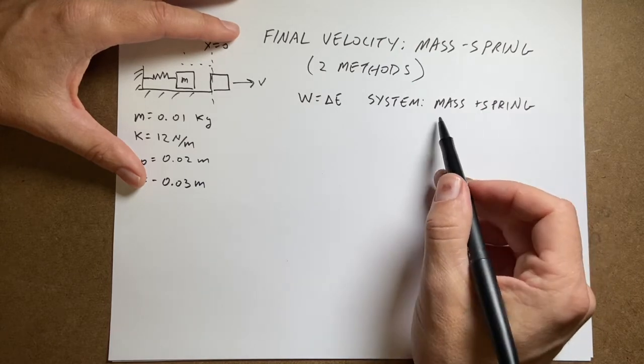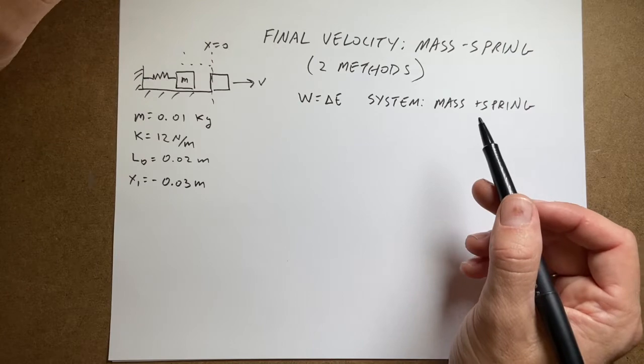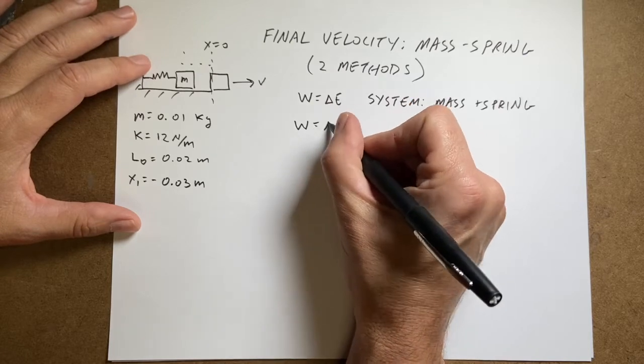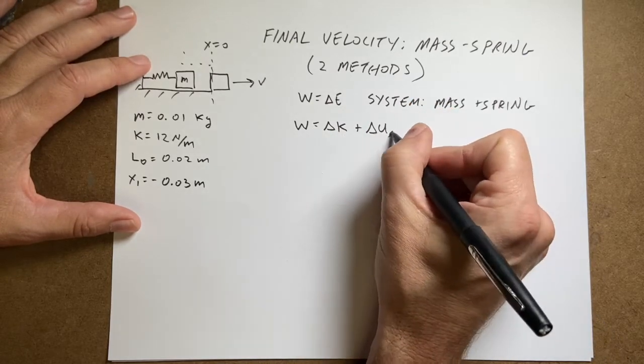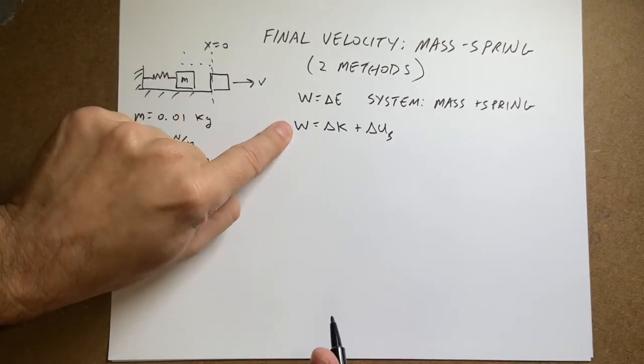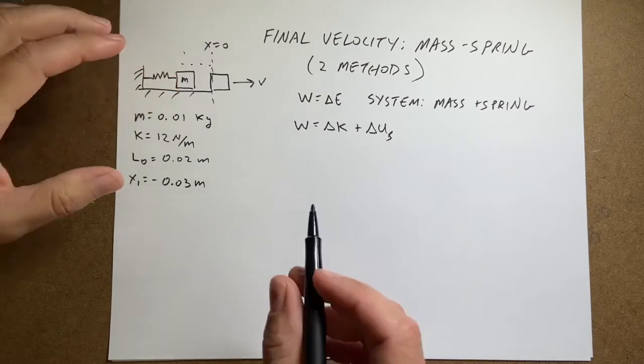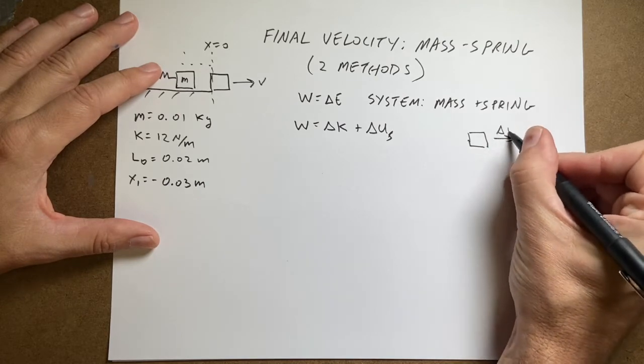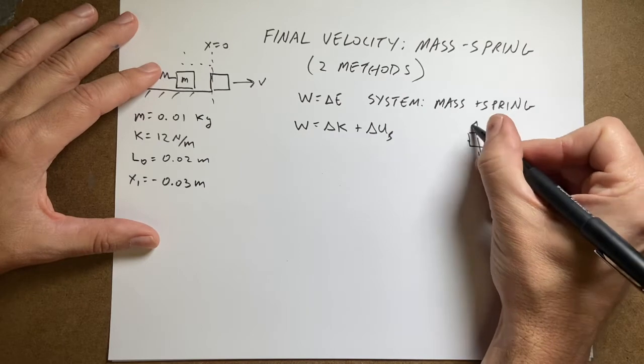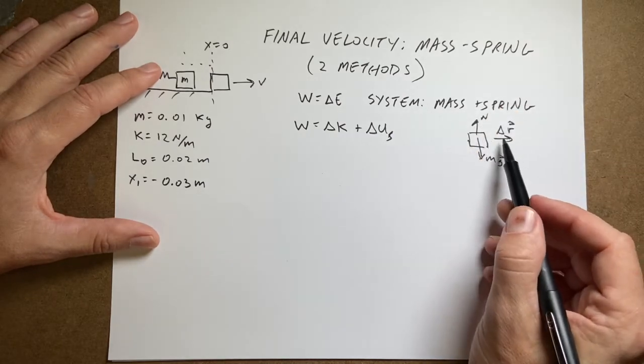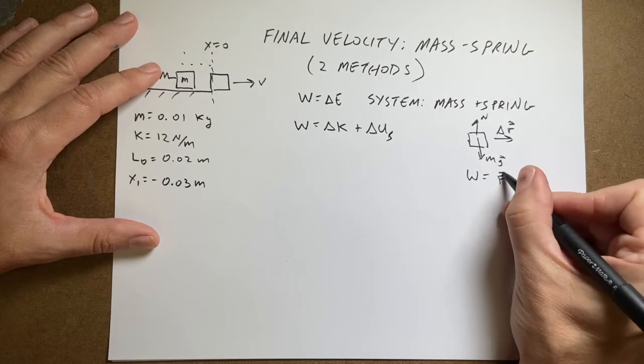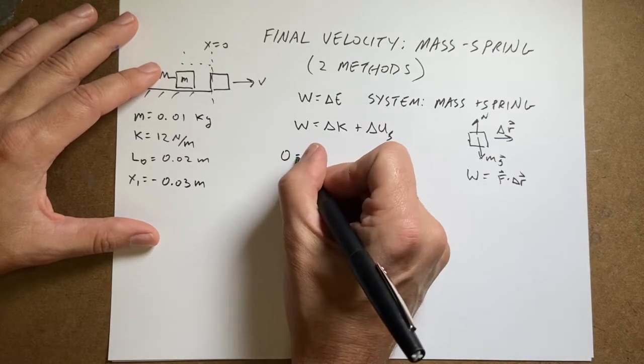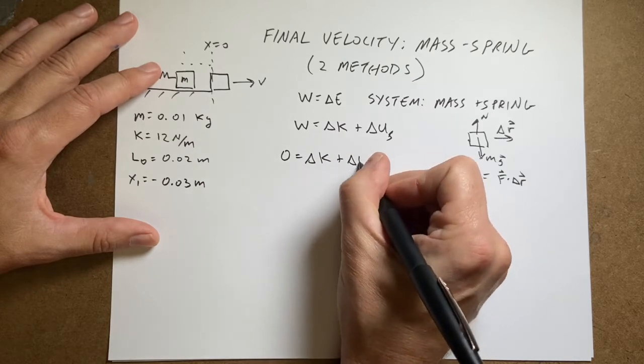Since the spring is in the system, then the spring is not going to do work on the system. That means that there will be a spring potential energy. So I'm going to have this work is the change in kinetic energy of the mass plus a change in spring potential energy of the spring. Now that's my whole system. There is a gravitational force and a normal force pushing on this. But if I look at that right here, here's my mass. And here's the displacement delta R. There's mg. There's the normal force. Both of those are perpendicular to the displacement. Work equals F dot delta R. Since they're perpendicular, the work done by these two forces is zero.